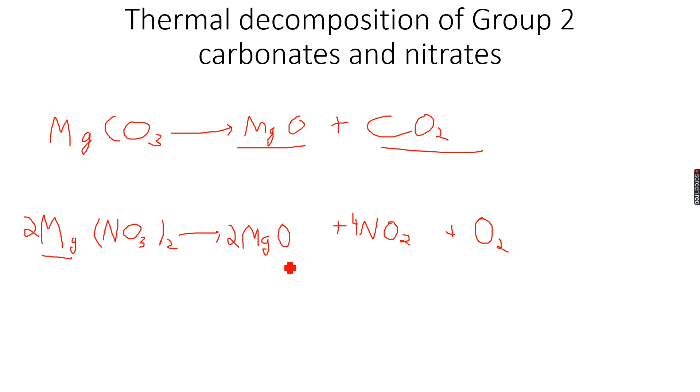So this is what the decomposition of nitrates produces. It produces the oxide, nitrogen dioxide gas, and oxygen gas. So all Group 2 carbonates will decompose to form the oxide and carbon dioxide gas. All Group 2 nitrates will decompose to form the oxide, nitrogen dioxide gas, and oxygen gas.